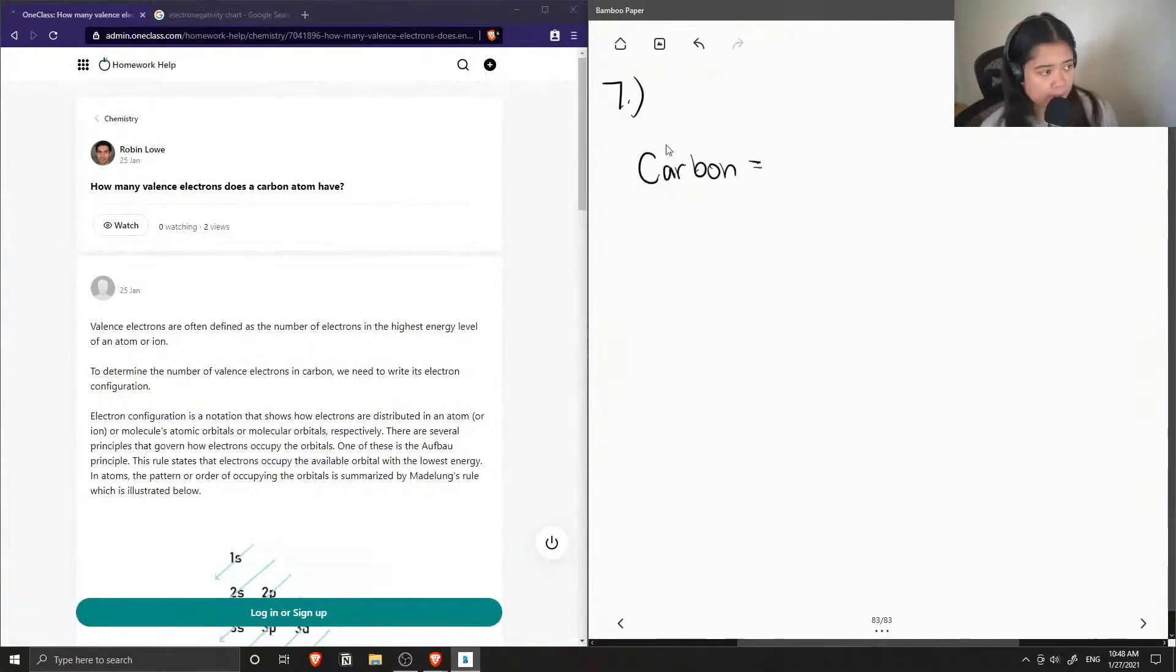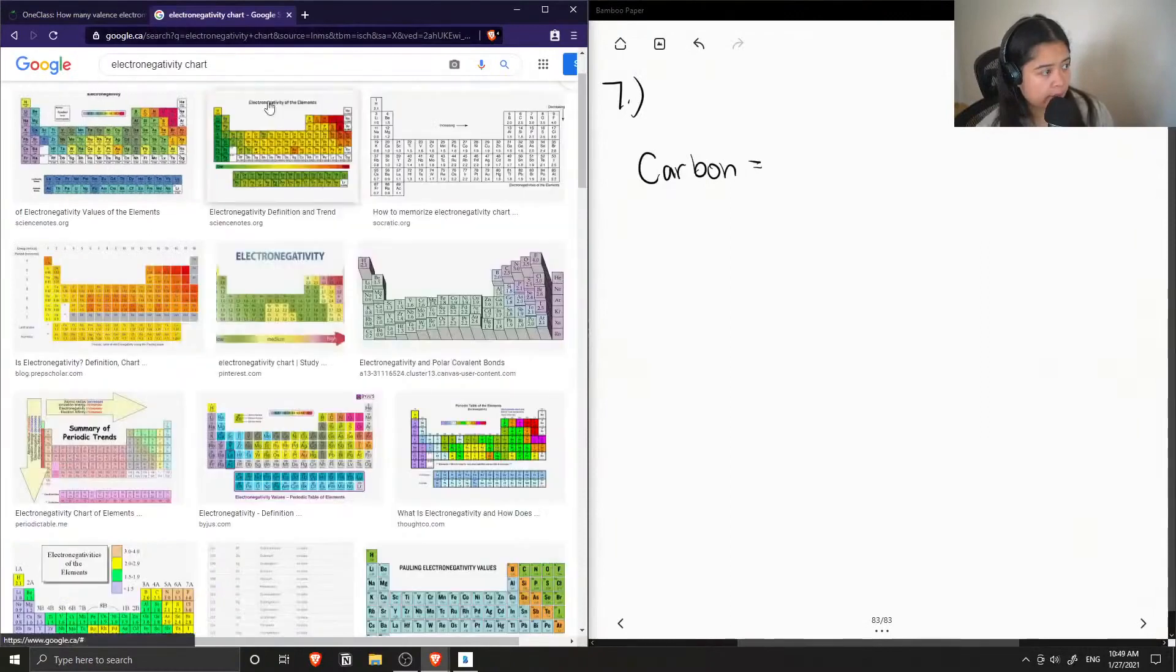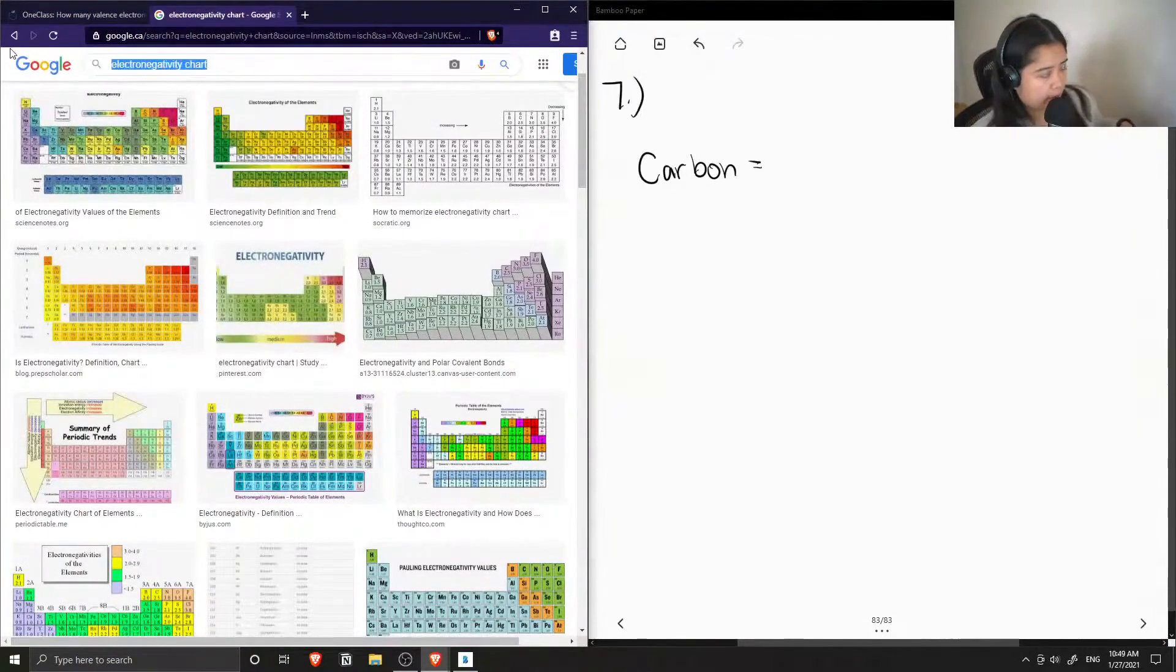So first, let's look up carbon on the periodic table. Let's just find a normal periodic table.